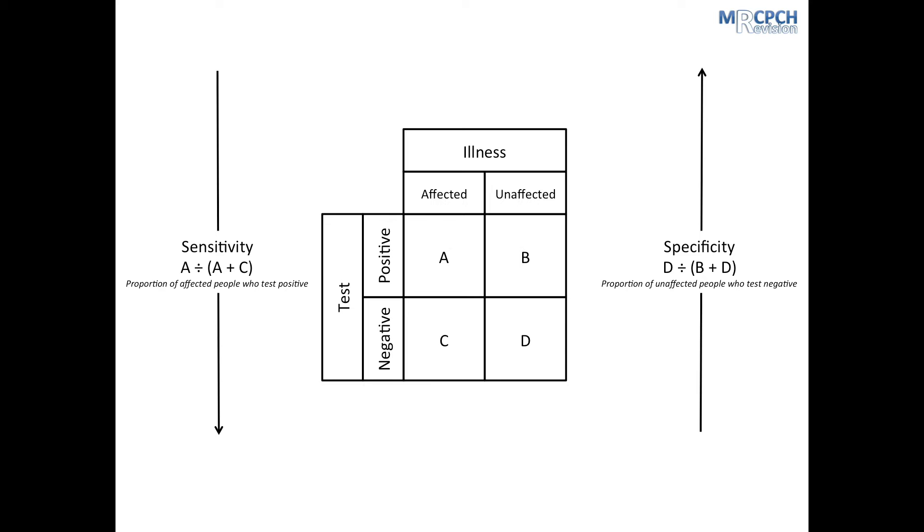Positive predictive value is the proportion of people who test positive that actually have the disease. Again, box A represents those who both test positive and have the disease. Boxes A and B represent the total number of people that test positive. So, positive predictive value is worked out by dividing A by A plus B, working left to right along the top row.